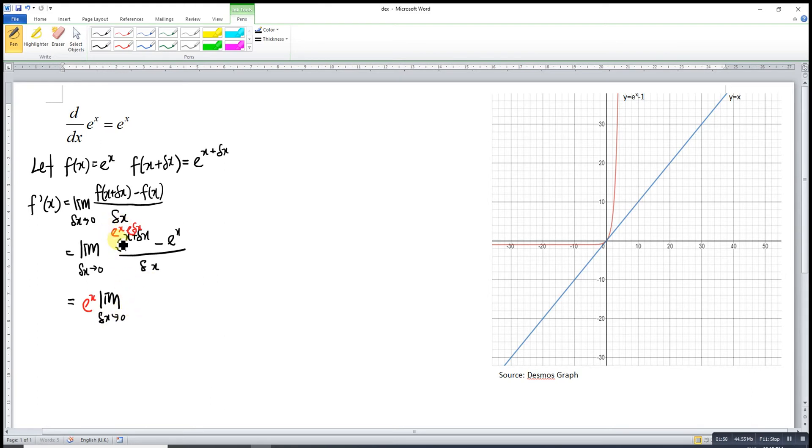So e^x times the limit delta x approaches 0. We take out e^x left only e^(delta x) minus 1 over delta x. When delta x approaches 0, e to the power of 0 is 1. 1 minus 1 is 0. Then 0 over 0 is indeterminate form.